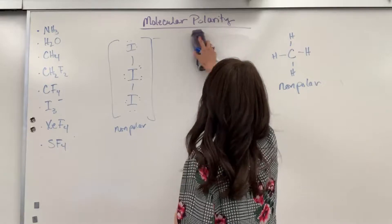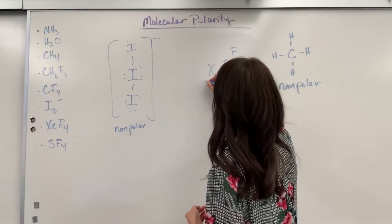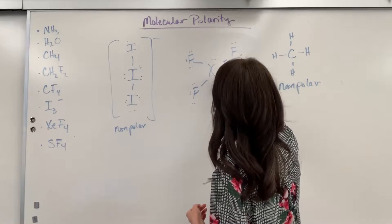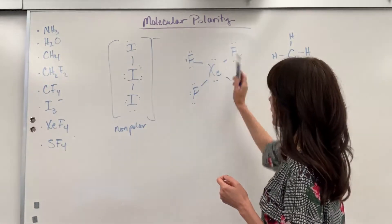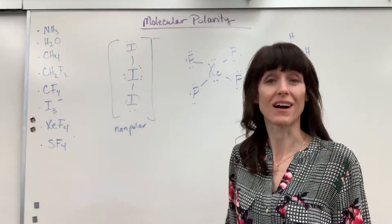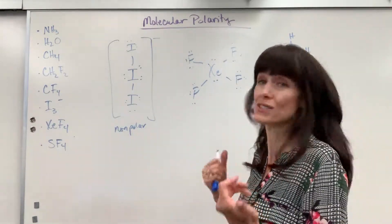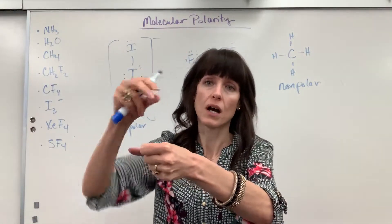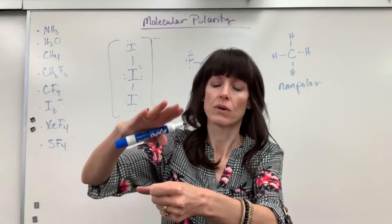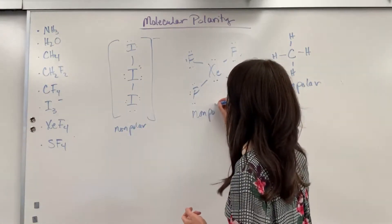Let's do XeF4 — xenon tetrafluoride. Xenon has eight valence electrons and shares an electron with each fluorine, leaving two lone pairs. Let's count electron domains: one, two, three, four, five, six — so the electron geometry is octahedral and the molecular geometry is square planar. I see lone pairs and think polar, but wait — is this one of the exceptions? It's square planar: xenon in the center, lone pair on top, lone pair on bottom, and four fluorines in a square. The lone pair on top and bottom cancel each other out — this is one of those exceptions. It is going to be non-polar.